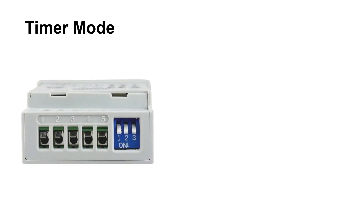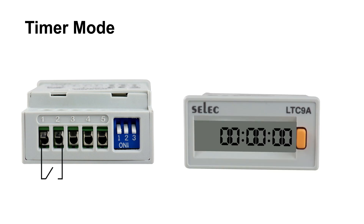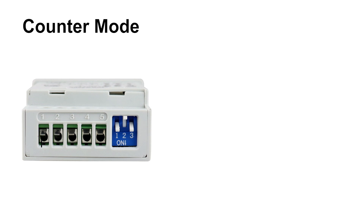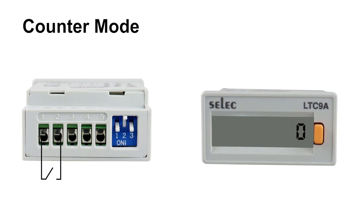Timer mode: When the contact gets closed — that is terminal 1 and 2 — the meter will start counting the time. For counter mode, it counts the number of times the contact gets closed.